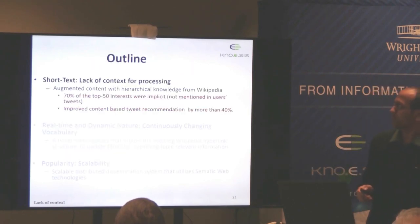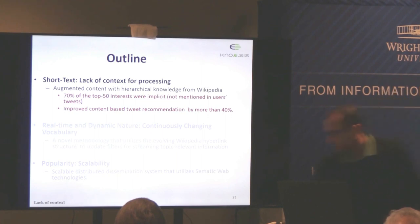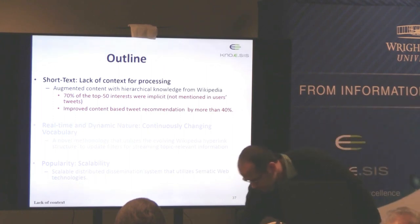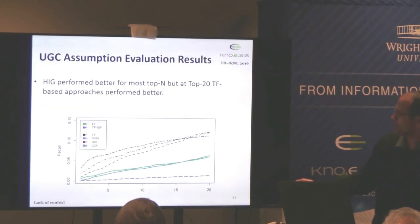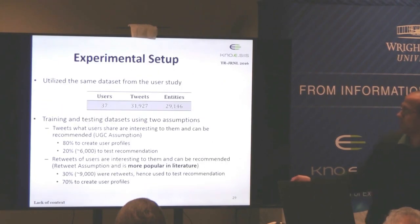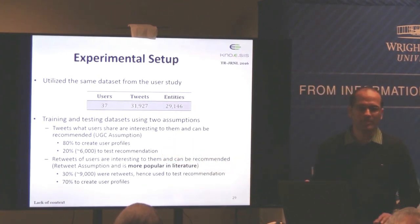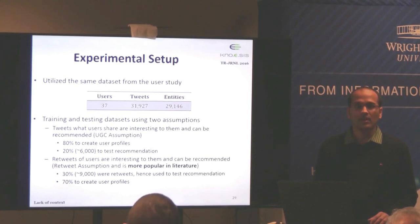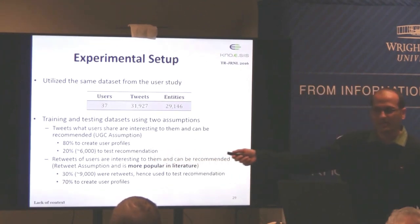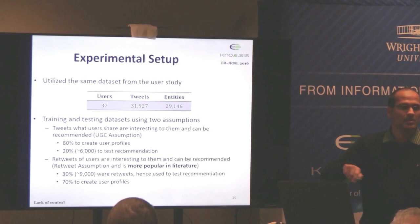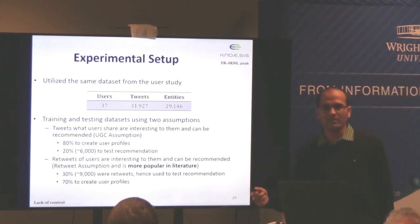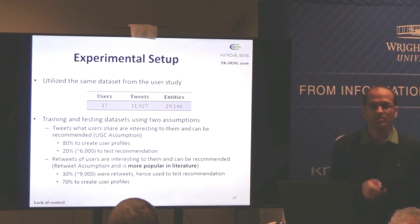To summarize the first part: we found a new way to represent tweets by addressing lack of context using hierarchical context. We extracted hierarchical, relevant concepts for tweets, utilized them for tweet recommendation, and showed that knowledge bases can improve recommendations. In the UGC assumption, 80% of user tweets built the hierarchical interest graph and 20% were used for testing. In the retweet assumption, retweeted content was used as test tweets and non-retweeted content built the profile.